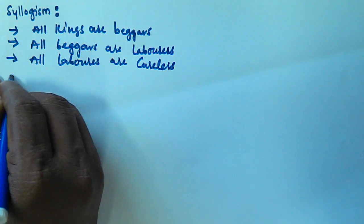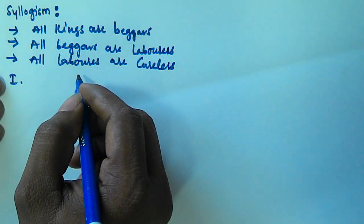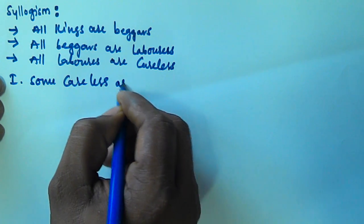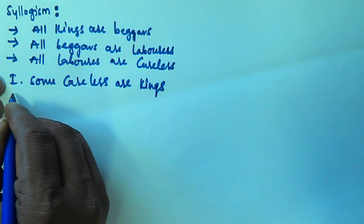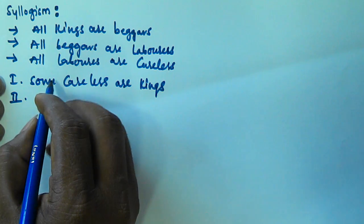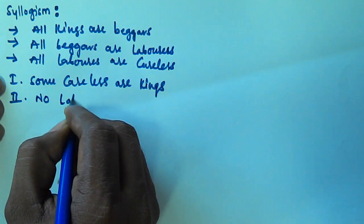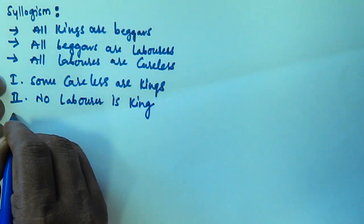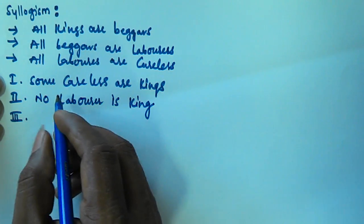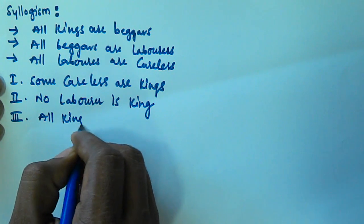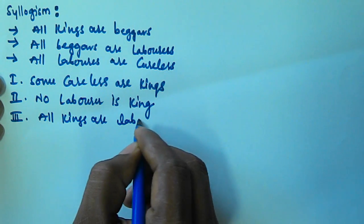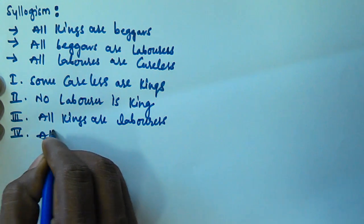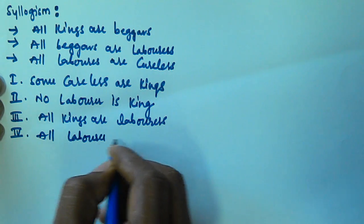The first conclusion given is: some careless are kings. The second conclusion given is: no labor is king. The third conclusion given is: all kings are laborers. And the fourth conclusion given is: all laborers are kings.